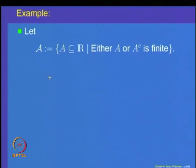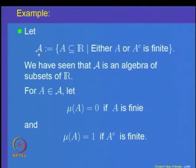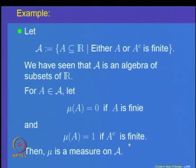In this example, we start with the collection A of all subsets of the real line which are either finite or their complements are finite. This collection A forms an algebra of subsets of R. We define a set function mu on this: mu(A) = 0 if the set is finite, and mu(A) = 1 if A complement is finite. We have also checked that mu is a measure on this algebra A — that is, mu is countably additive.